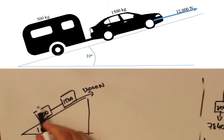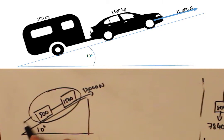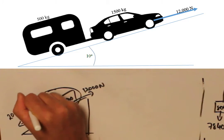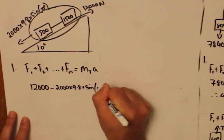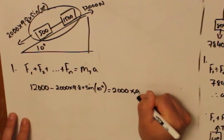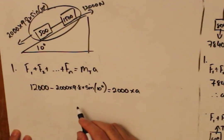So considering the system as a whole, we get 12,000 minus 2000 times g times sine of 10 degrees equals the combined mass times A. Therefore, acceleration equals 1.7m per second squared.